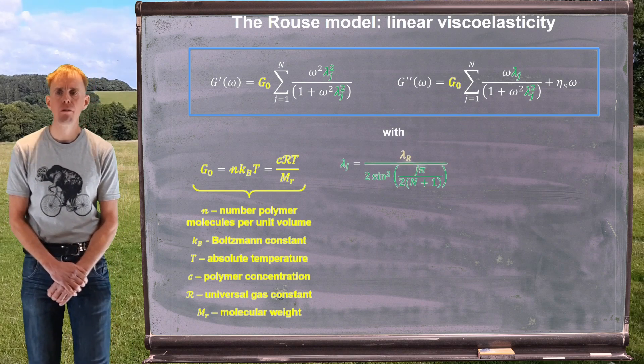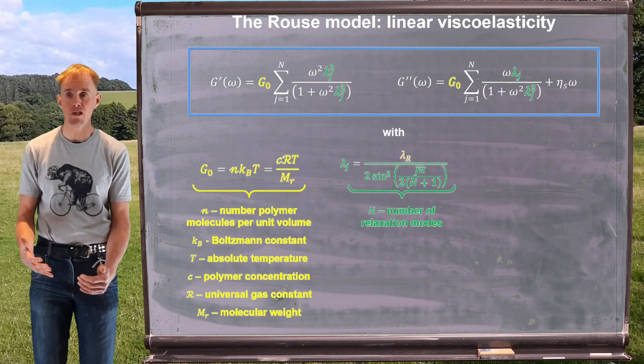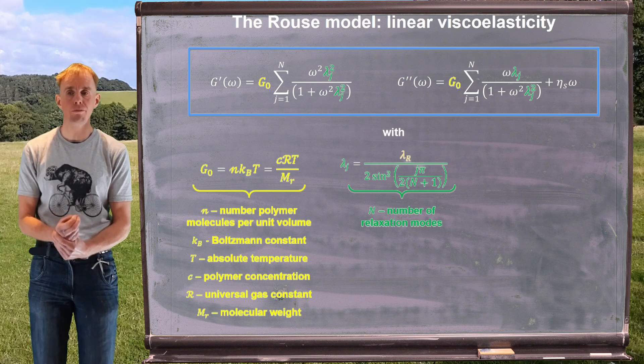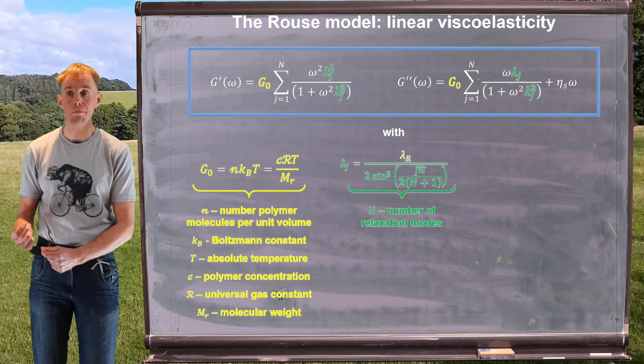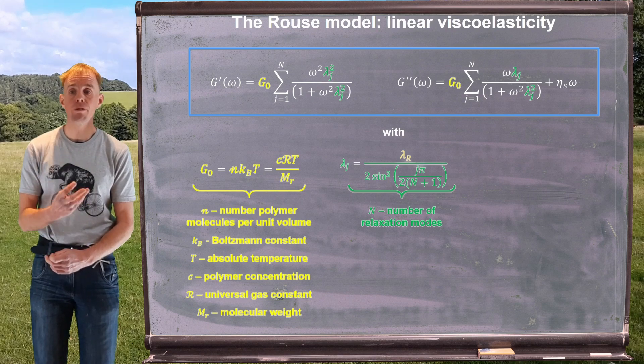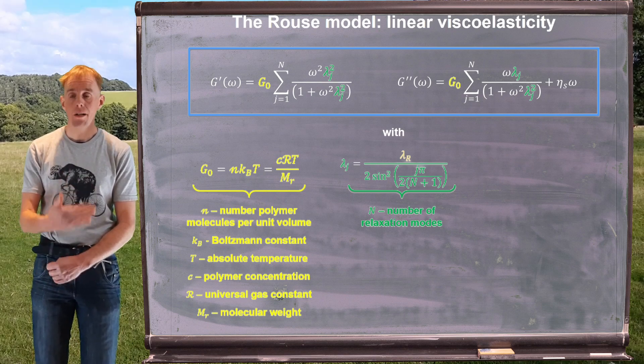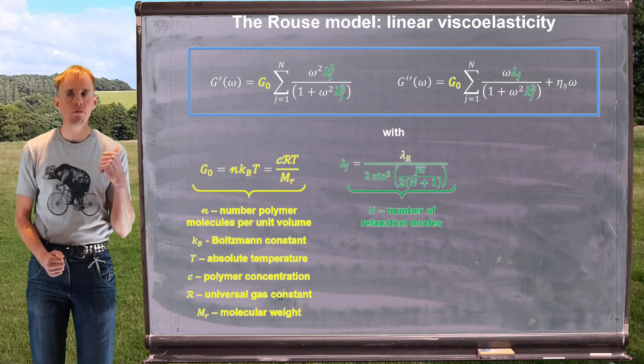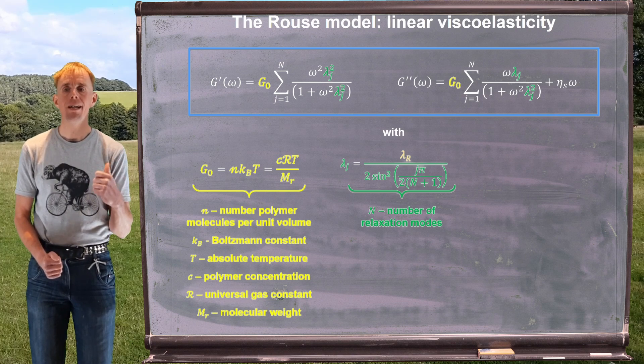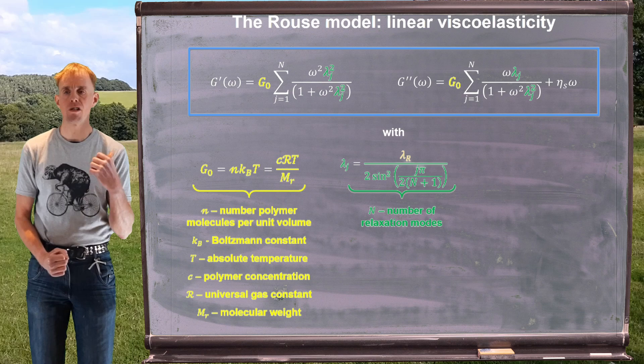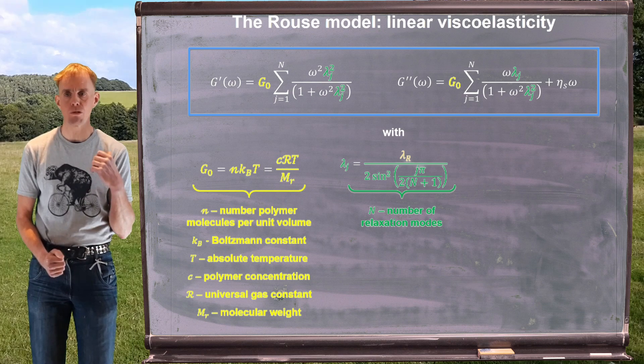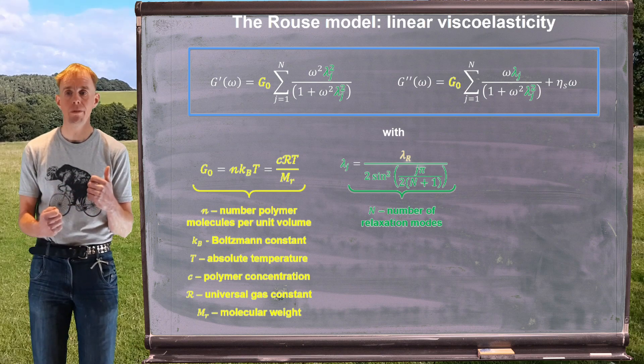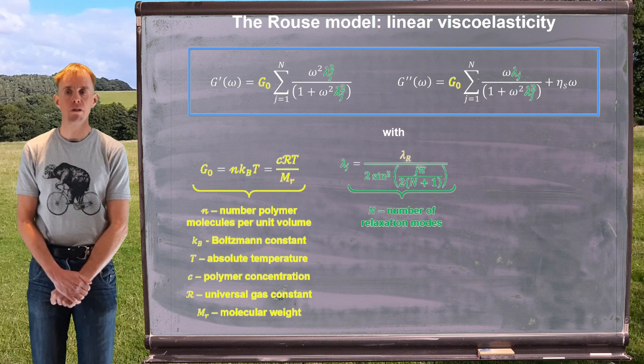We also have relaxation times. We have N relaxation times and big N here is the number of relaxation modes, not to be confused with script N, which is the Kuhn number. Different relaxation modes contribute to different types of behavior. But the key is that every relaxation time is linked to a common relaxation time, λ_R, the Rouse time. If we're summing over N modes, we can see the relationship between the jth mode and the Rouse time in the equation in green on the board.